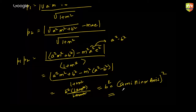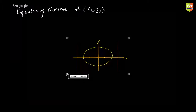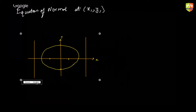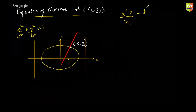We'll move on to the equation of normal now. The equation of normal to the ellipse at point (x1, y1) — taking our standard ellipse, at a point x1, y1 you're sketching a normal. Prove that the equation of the normal drawn to the standard form x²/a² + y²/b² = 1 at point x1, y1 is given by: a²x/x1 - b²y/y1 = a² - b². Please remember this result.